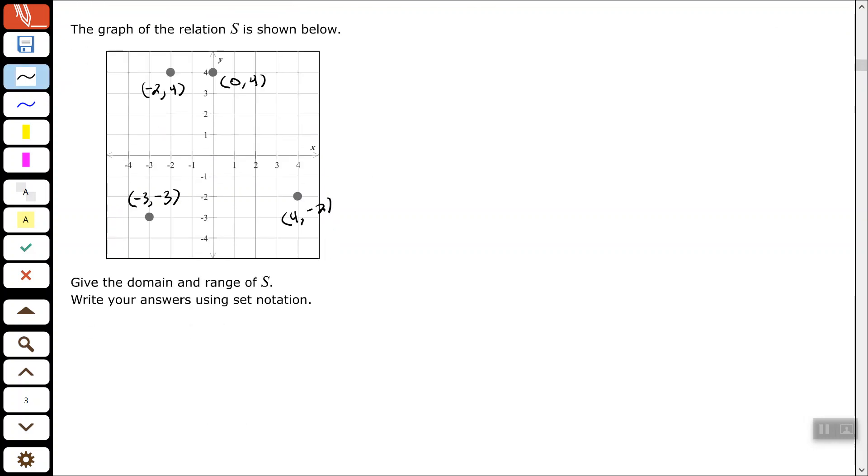So again, your domain would consist of your x coordinates or your first elements in the ordered pair. So we have negative two, negative three, zero, and four. And it doesn't matter which order you put those in. It doesn't matter the order. You may want to put them in numerical order. That's up to you.